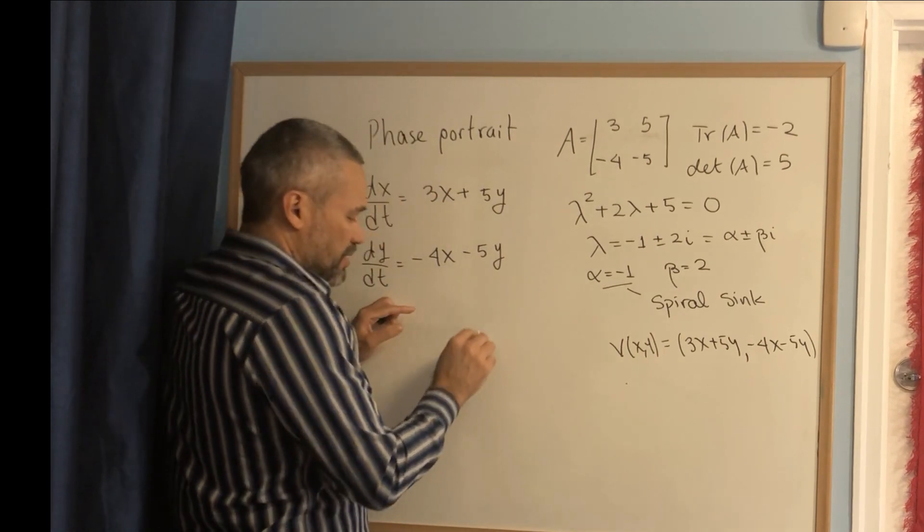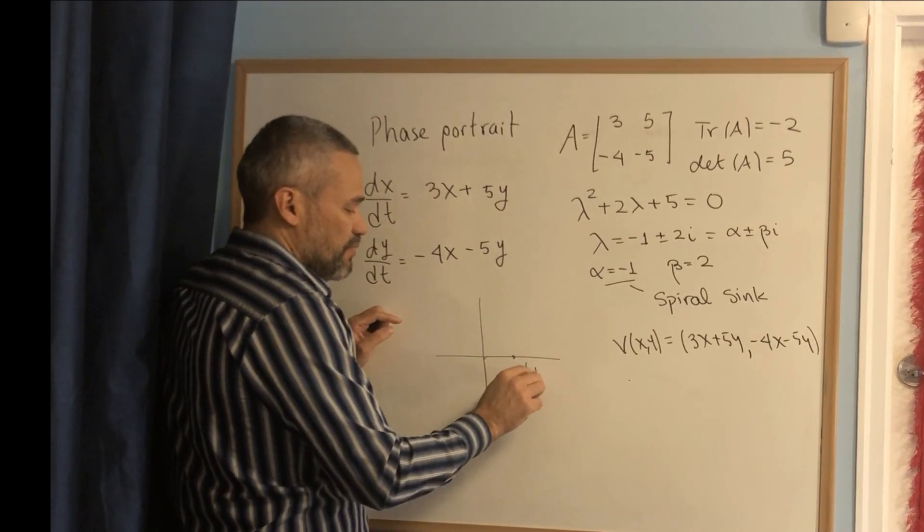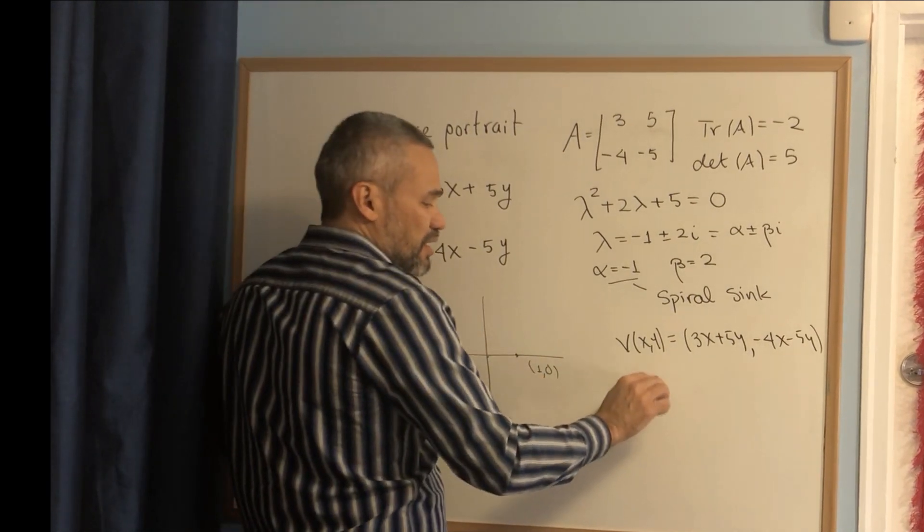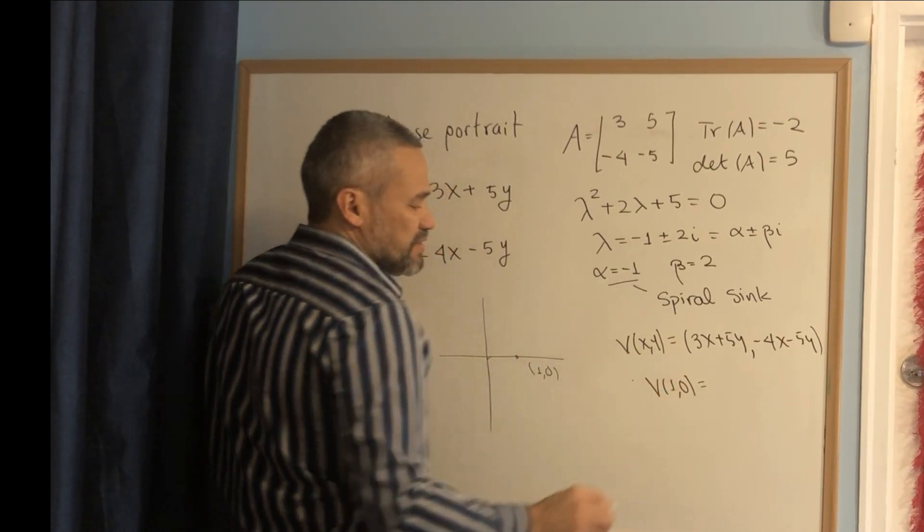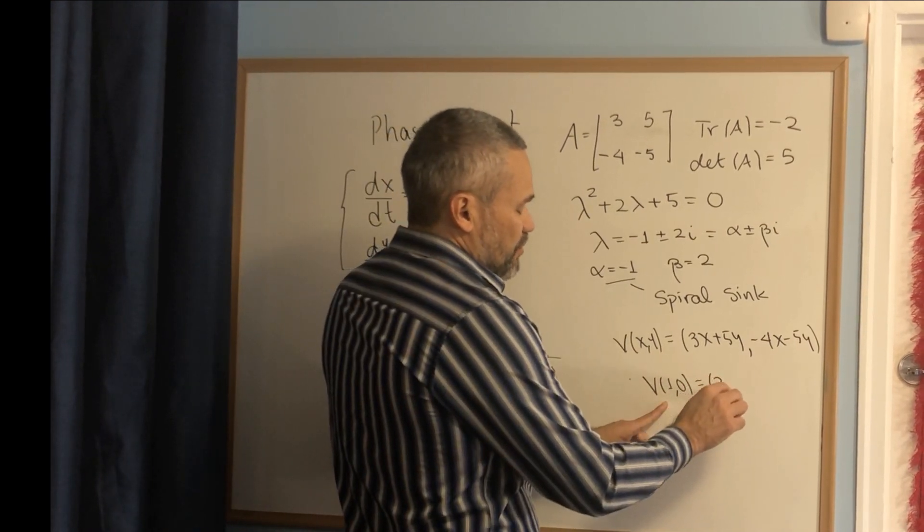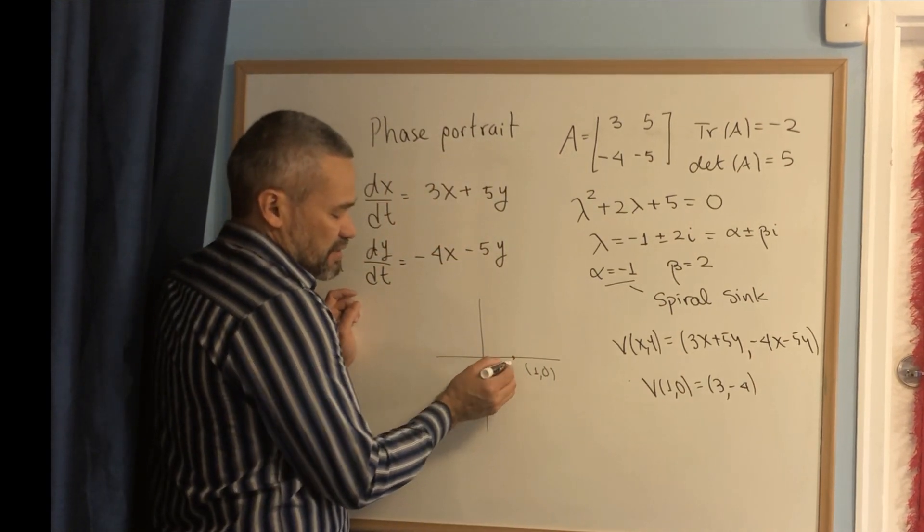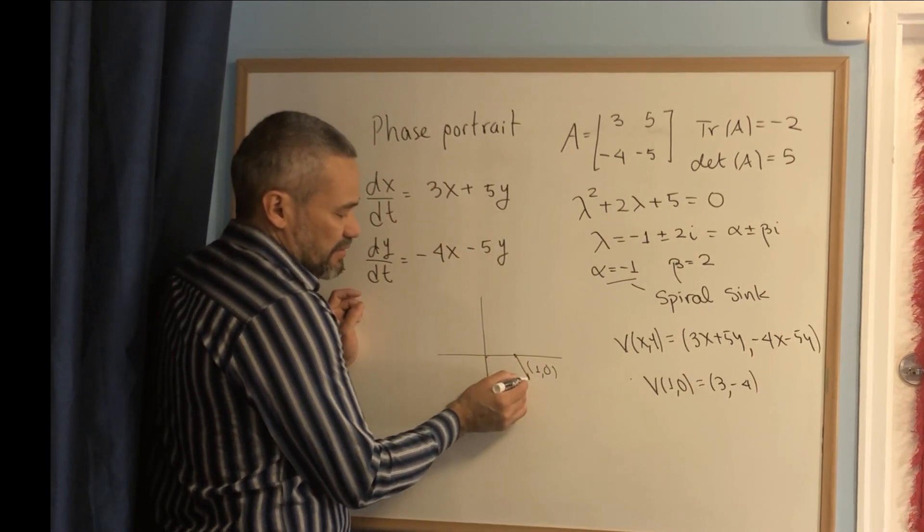We pick a point—suppose this is the Cartesian plane. We pick (1,0). We can always pick (1,0). We compute V(1,0): when x = 1 and y = 0, we get the vector (3, -4), which is a vector that goes in that direction.